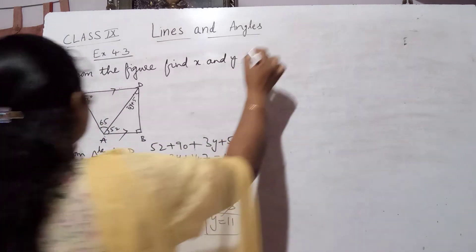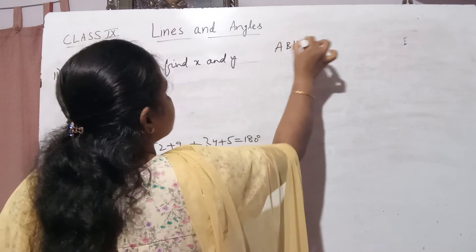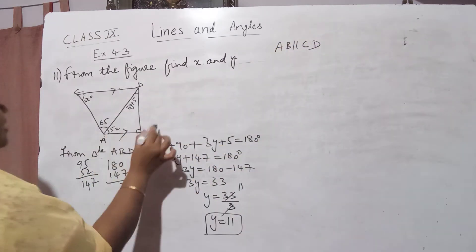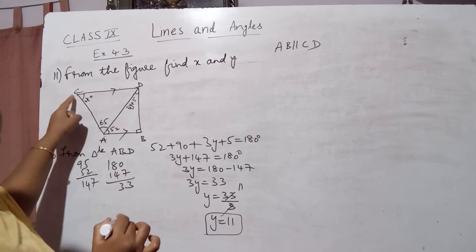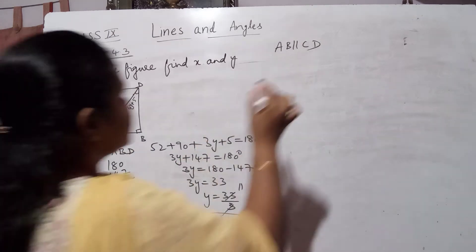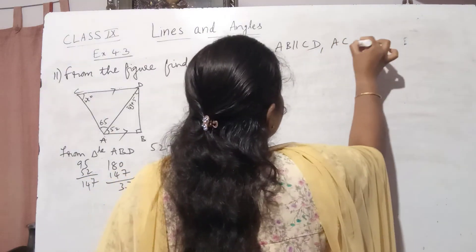Now here AB is parallel to CD. I have AB is parallel to CD, and also if I take this as transversal, that is AC is transversal, AC is transversal.